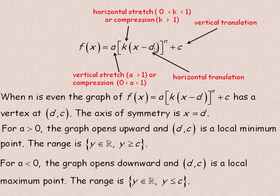The value 'd' is the horizontal translation. It always seems to be the opposite because it's written with the x — just as the vertical translation would seem opposite if written with the f of x value. So x minus d moves the graph d units right or left depending on the sign of d. When n is even, the graph has a vertex at the point (d, c) — true not just for parabolas but for quartic, degree-6, and degree-8 functions as well. The axis of symmetry is x equals d.